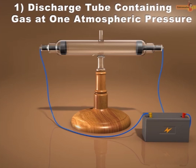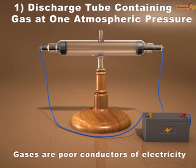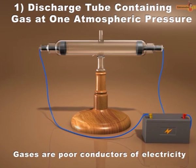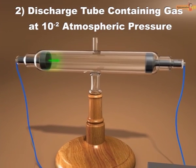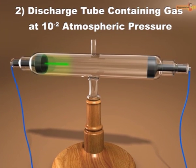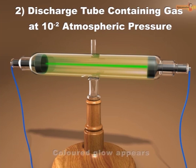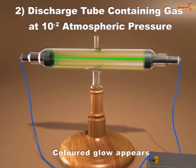At one atmospheric pressure, no current flows between the electrodes because gases are poor conductors of electricity. On decreasing the pressure with the help of a vacuum pump to about 10 to the power minus 2 atmospheres, the gas becomes conducting and a colored glow is observed.